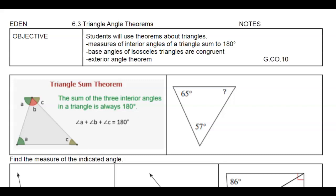6.3 is going to talk about different triangle angle theorems. Many of these you probably already know, but we're just going to go ahead and review them all together. We're basically going to do these three things: the measures of the interior angles add up to 180, the base angles of an isosceles triangle are congruent, and the exterior angle theorem. Some you'll find numerically, some will set up equations to solve.